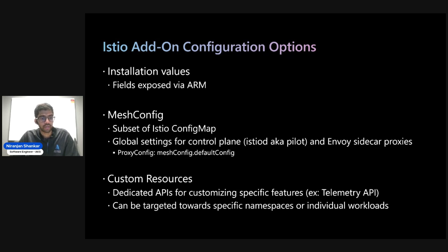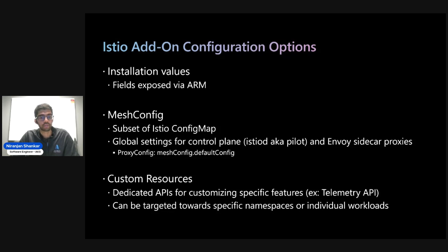The other option is mesh config, which can be updated dynamically after installation. The mesh config in Istio is a subset of the Istio config map, and these are settings that a mesh administrator would use to apply globally across the mesh — both for the control plane, and also through the default config or proxy config field, which you can use to configure all of your Envoy sidecars in the mesh.